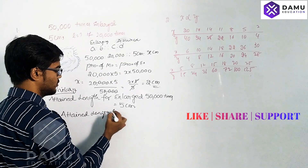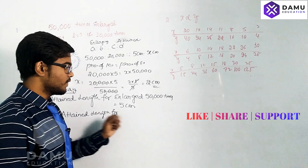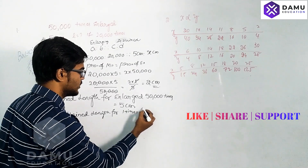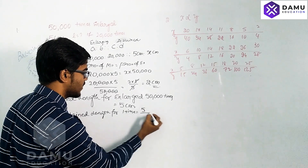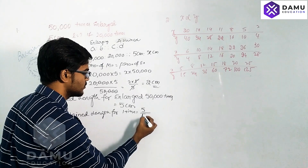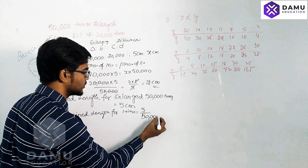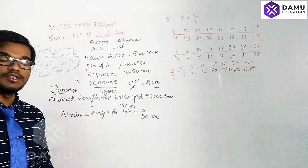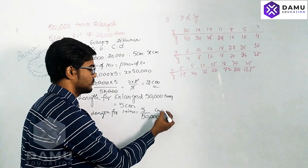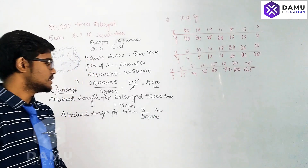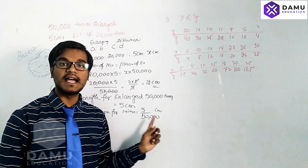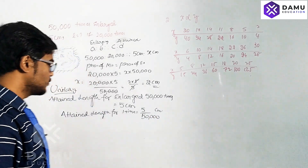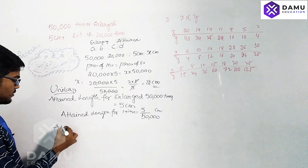The attained length for one time is 5 divided by 50,000 centimeters. So for one enlargement, it attains 5 by 50,000 centimeters.